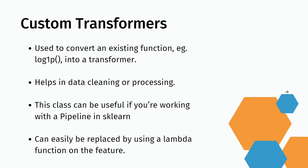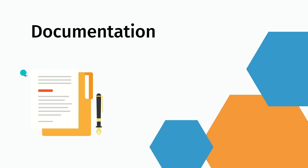Custom transformers are used to convert an existing function into a transformer — for example, log1p, where you compute log(1 + x) to base e. If you have an existing function (exponential, multiplication, etc.) and want to use it for transformation, you can use a custom transformer. This helps in data cleaning or processing and is useful when working with pipelines in sklearn. An alternative is to use a lambda function on the feature.